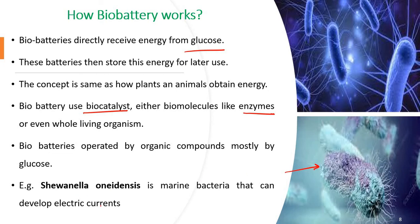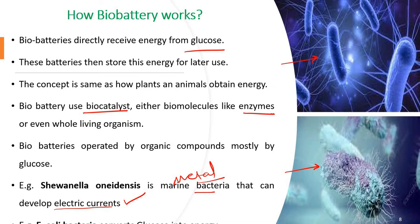For example, Shewanella oneidensis is a marine bacteria that can develop electric current. When this species comes in contact with metal, it produces electric current. By using such bacteria, you can generate electric current — that is part of bio-batteries. Also, E. coli bacteria are used to generate energy from glucose. These are two prominent examples of bacteria used in bio-batteries.